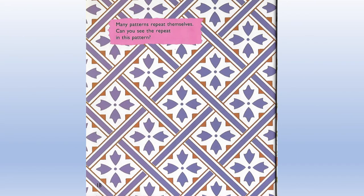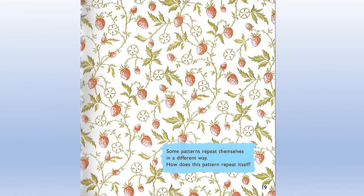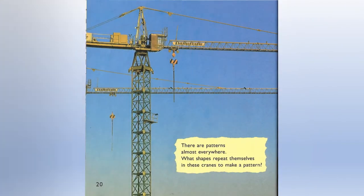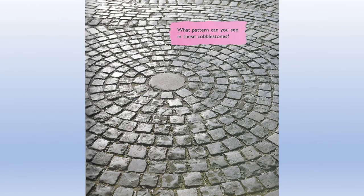Many patterns repeat themselves. Can you see the repeat in this pattern? Some patterns repeat themselves in a different way. How does this pattern repeat itself? There are patterns almost everywhere. What shapes repeat themselves in these cranes to make a pattern? What pattern can you see in these cobblestones?